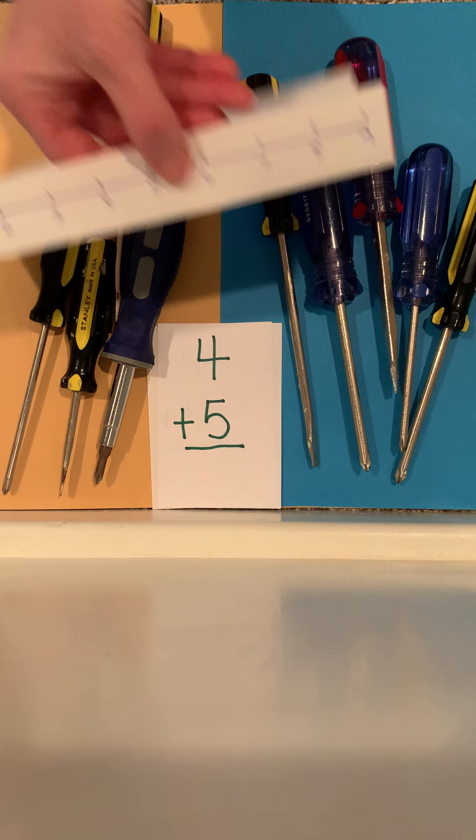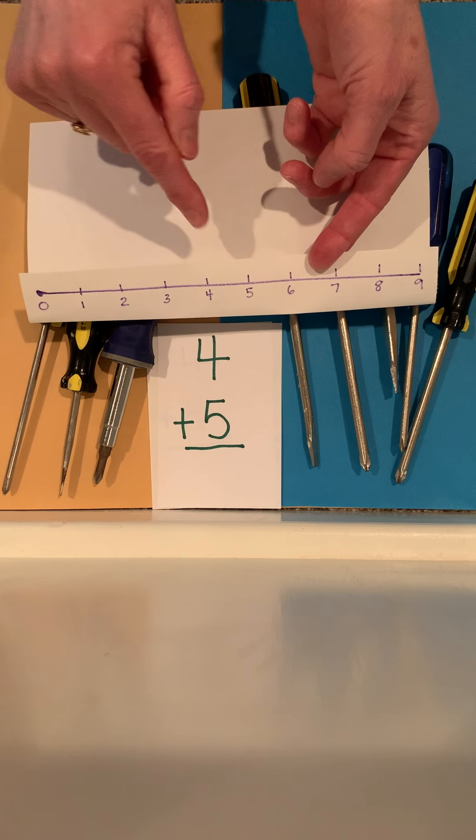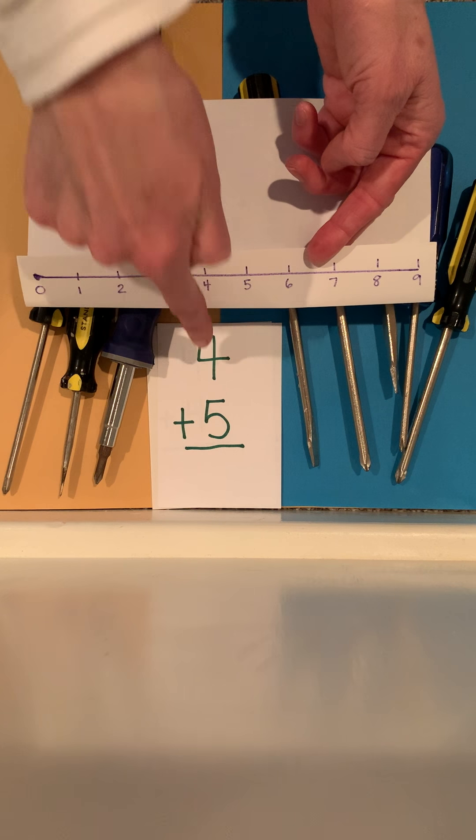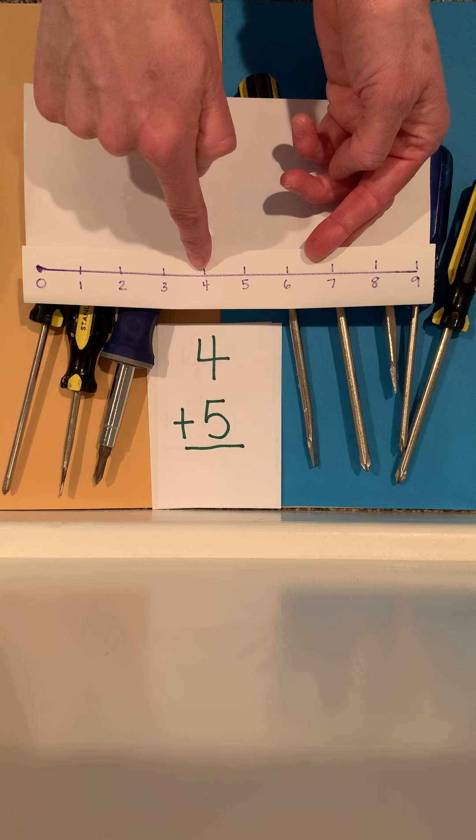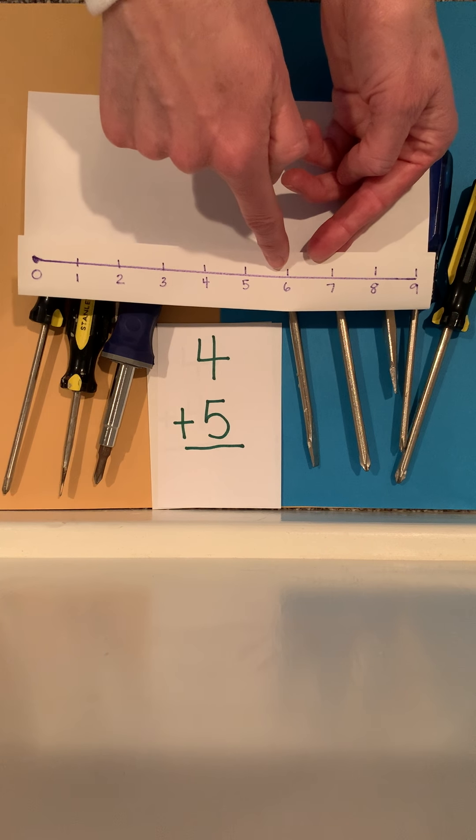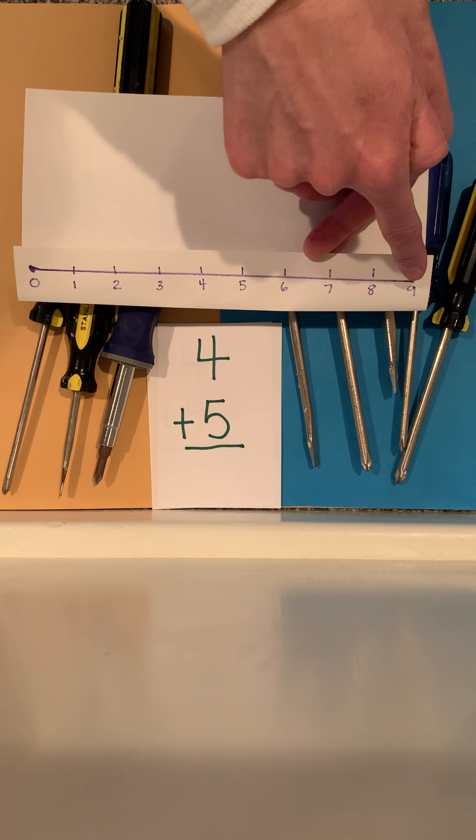If we look at our number line and we start with the smallest number, which is 4, and we have to have 5 more. 1, 2, 3, 4, 5. We get our answer 9.